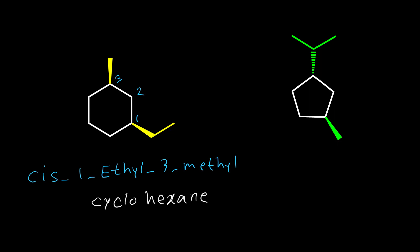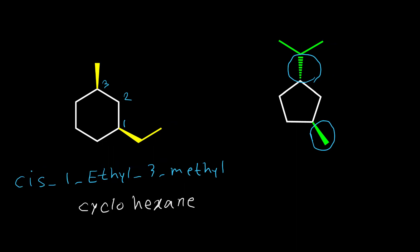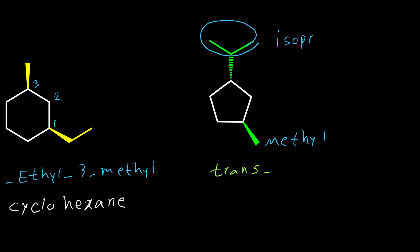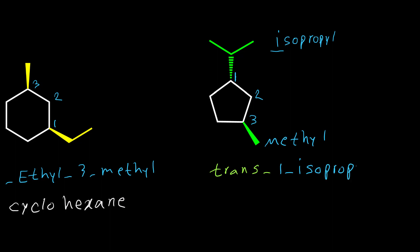For the second compound, this group is dash and this group is wedge — these two groups are on two different faces of the ring, so it is a trans isomer. We write trans, then name the compound. This group is methyl and this group is isopropyl. Isopropyl has priority because we consider the letter I, so this carbon is number one. Then we have 1-isopropyl, 3-methyl, cyclopentane: trans-1-isopropyl-3-methylcyclopentane.